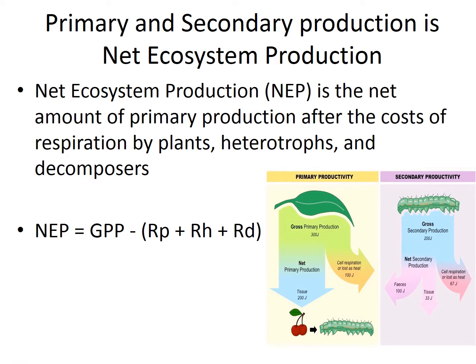When you combine secondary and primary production, you get net ecosystem production (NEP), which is the net amount of primary production after the cost of respiration by plants, heterotrophs, and decomposers. As a mathematical equation: NEP equals GPP minus the respiration of plants, heterotrophs, and decomposers, showing how much primary production is actually occurring in an ecosystem.